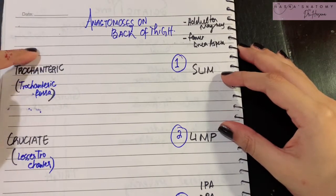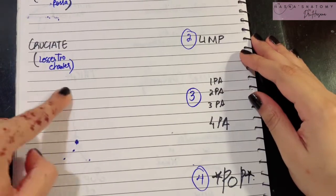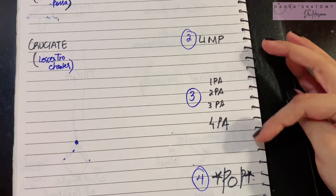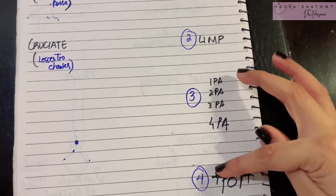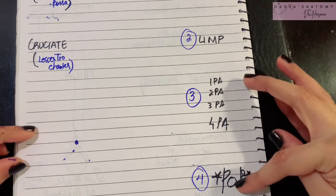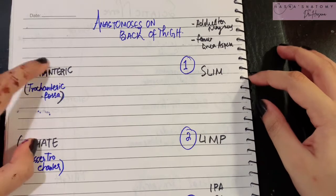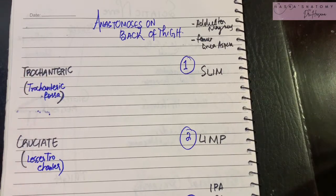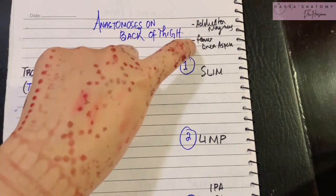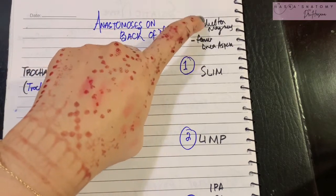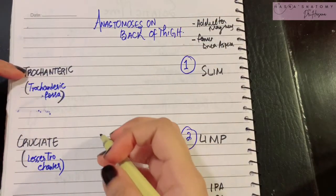In the back of the thigh there are multiple anastomoses occurring from above downwards. It starts with the trochanteric anastomosis, then the cruciate anastomosis, then the perforating arteries anastomosing with each other, and finally the fourth perforating artery anastomosing with the popliteal artery in the lower part. The entire anastomosis occurs in the substance and surface of the adductor magnus and on the femur bone.